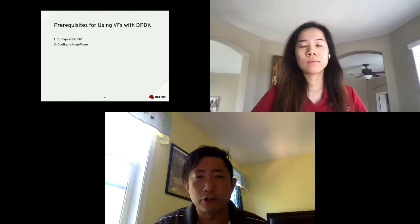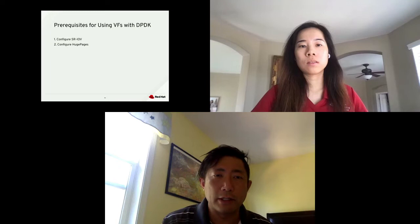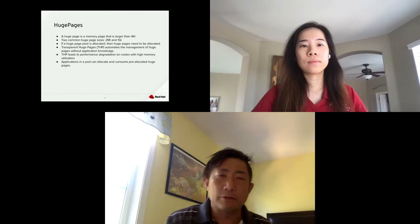The prerequisites of using virtual functions in DPDK involve two steps. First, we need to configure SRIOV, and the second step is to configure huge pages. Let's first introduce the concept of huge pages. A huge page is a memory page that is larger than 4K. Normally, we have huge pages of size two megabytes and one gigabyte.